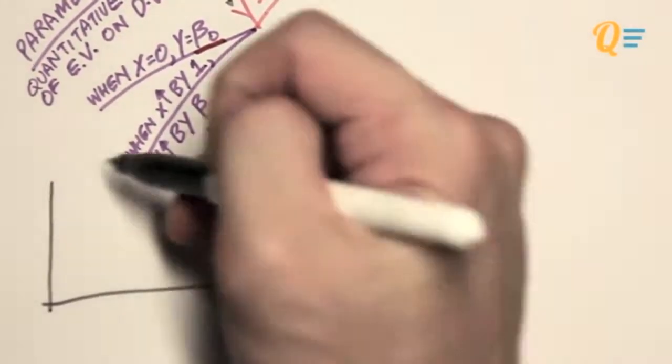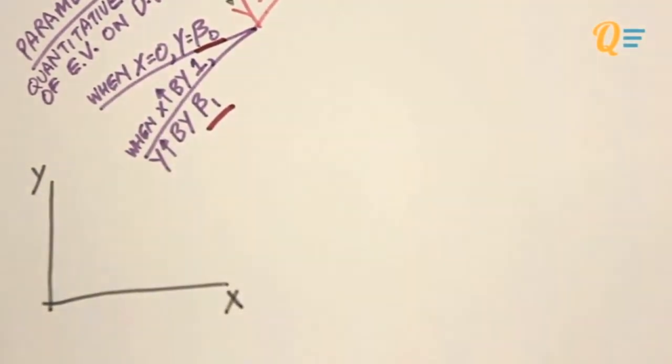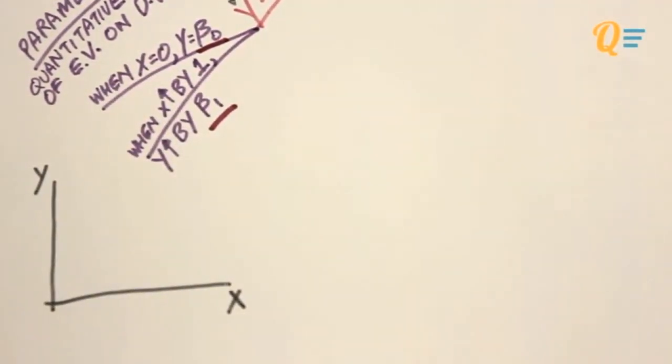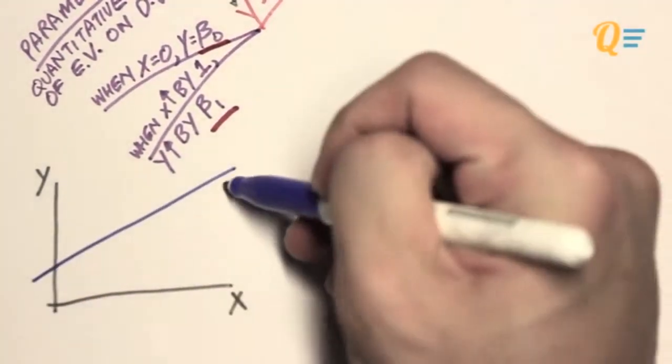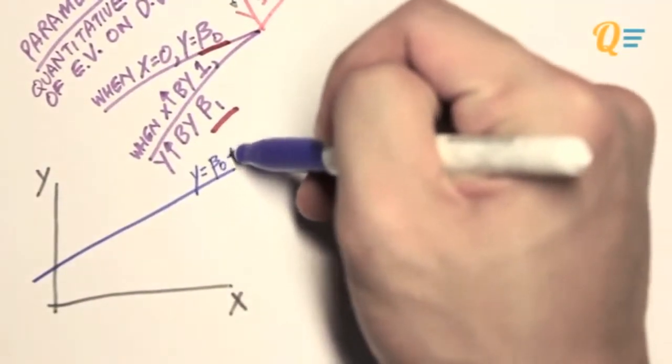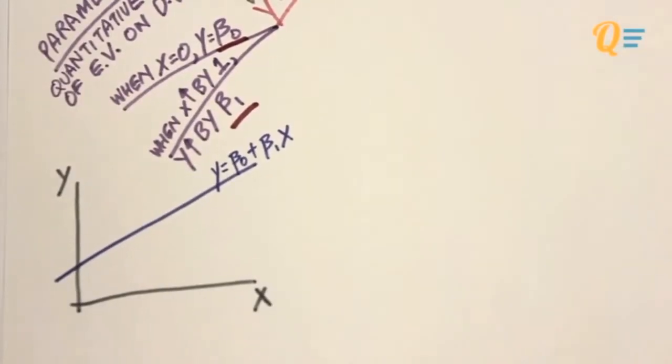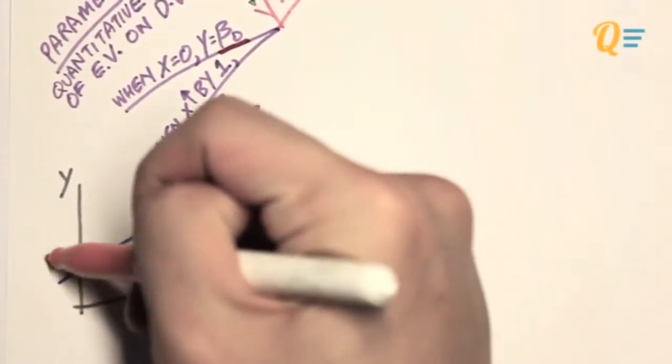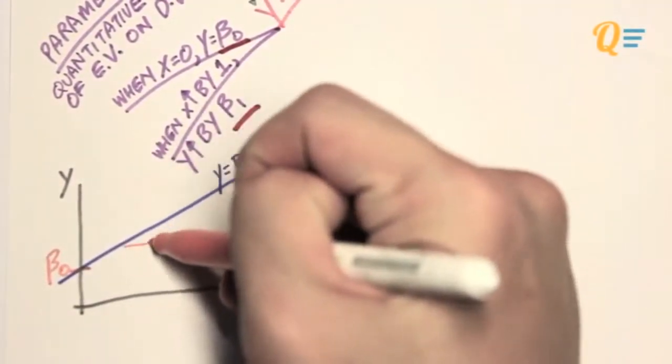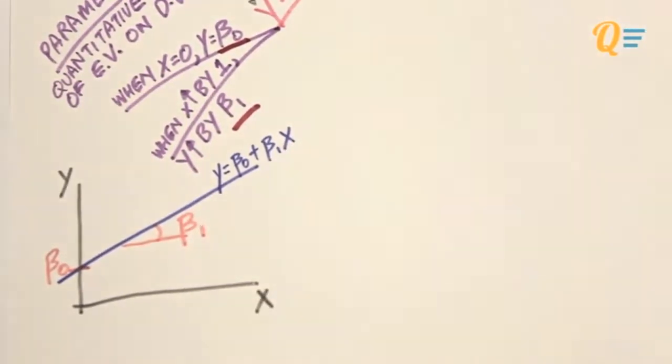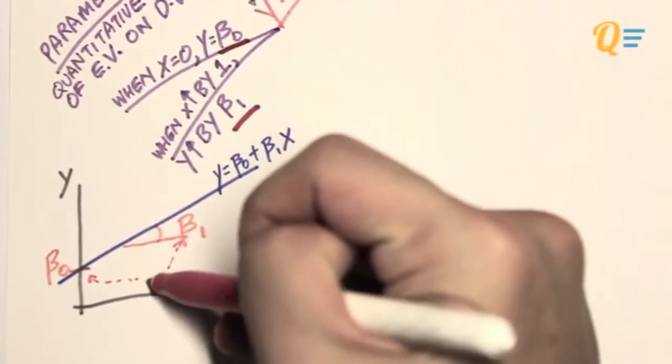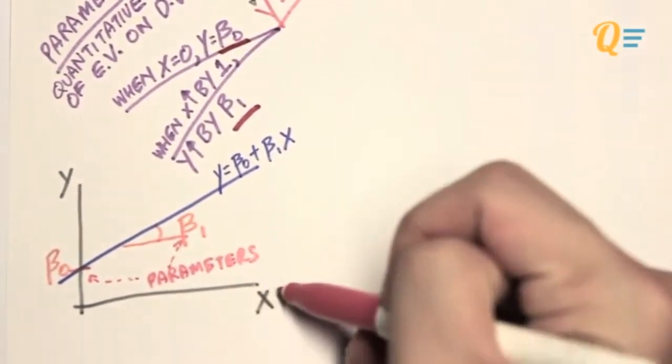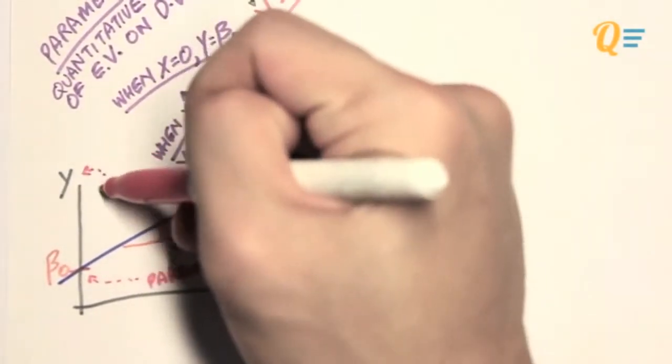And I can actually plot this econometric function on the graph. So I'm going to have an upward sloping curve because the value of beta1 is positive. So the blue line over here is the econometric function, and as you can see, the y-intercept is going to be beta0, and the gradient of this curve is going to be beta1. So this is clearly seen as a linear function, and that is how econometric functions work.